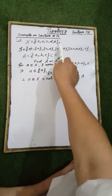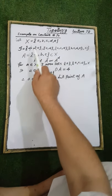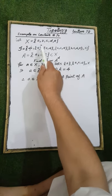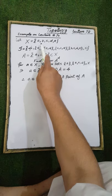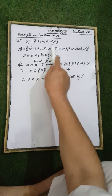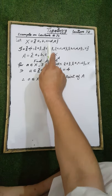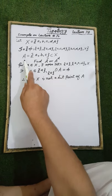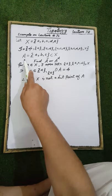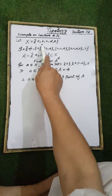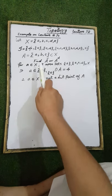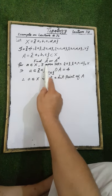Bismillahirrahmanirrahim. Example on lecture number 70. Let X be a set containing elements a, b, c, d, e. This is a topology on the ground set X. The set A, which is a subset of the ground set X — we need to calculate the derived set of the set A.